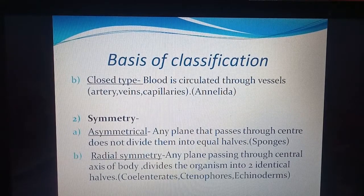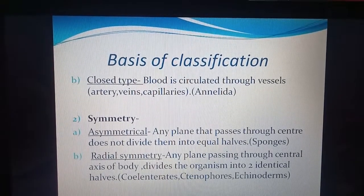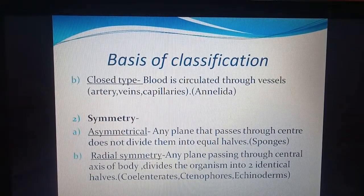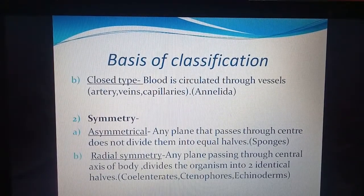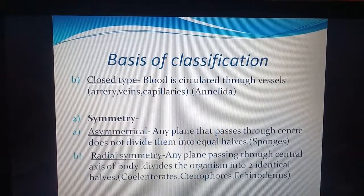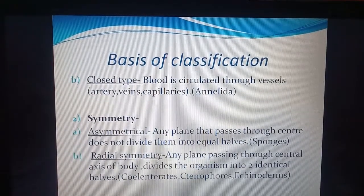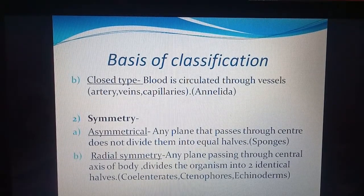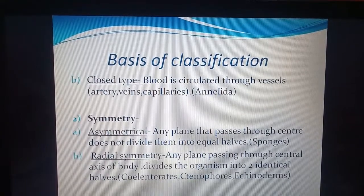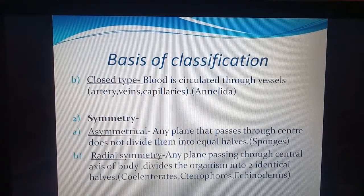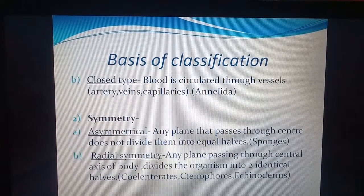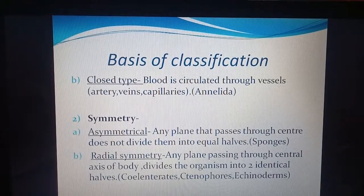The second criterion is symmetry. Asymmetry: some animals have no equal parts — no plane passing through the center divides them into equal halves. Example: porifera, which are irregular in shape. Radial symmetry: any plane passing through the central axis divides the organism into two identical halves. Examples are cnidarians including hydra, ctenophores which are aquatic animals, and echinoderms which include starfish. Starfish is star-shaped and can be divided into five equal parts along the radius.